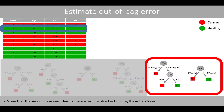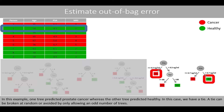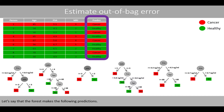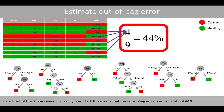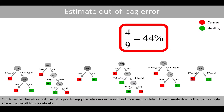For the second case, by chance it was not involved in building two trees. One tree predicted prostate cancer, whereas the other predicted healthy — resulting in a tie. A tie can be broken at random or avoided by only allowing an odd number of trees. Based on the forest's predictions, four out of the nine cases were incorrectly predicted, meaning the out-of-bag error is equal to about 44%. Our forest is therefore not useful in predicting prostate cancer based on this example data, mainly because our sample size is too small.